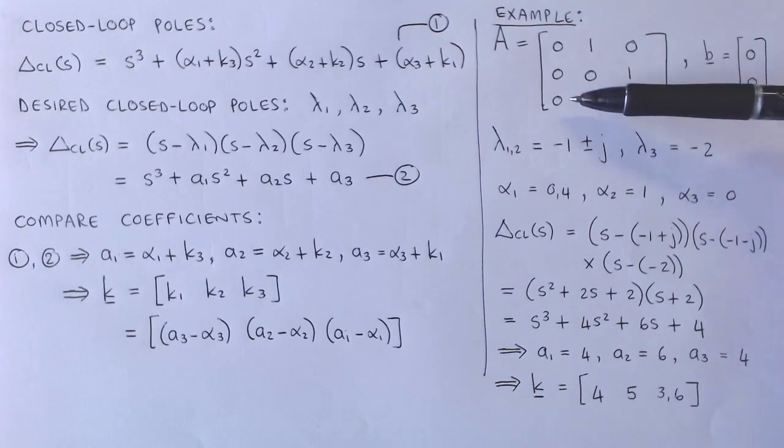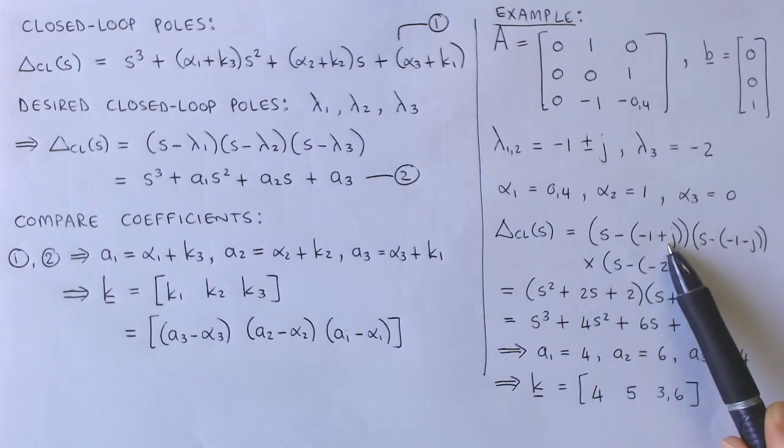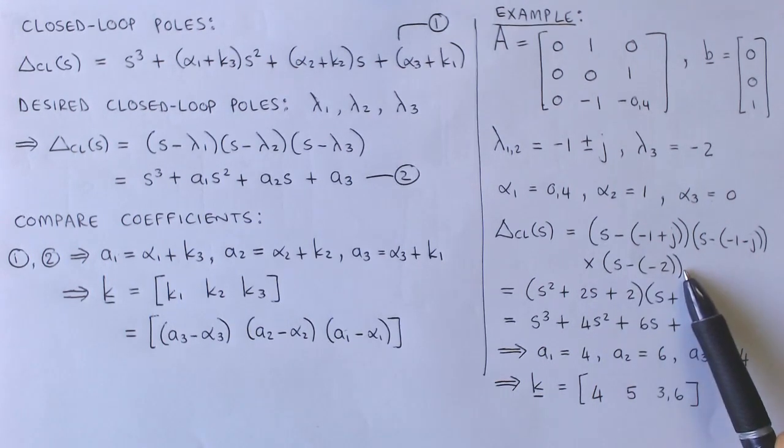We recognize this system to be in control-canonical form with alpha 1 equal to 0.4, alpha 2 equal to 1, and alpha 3 equal to 0. The desired characteristic polynomial is given by S minus the first pole times S minus the second pole times S minus the third pole.